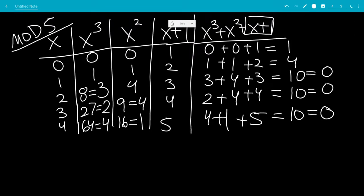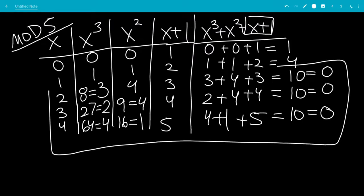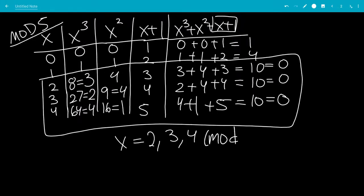So our answers will be these three columns. So we have that x is 2, 3, and 4 mod 5.